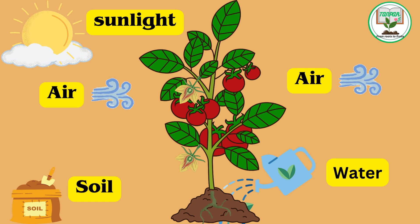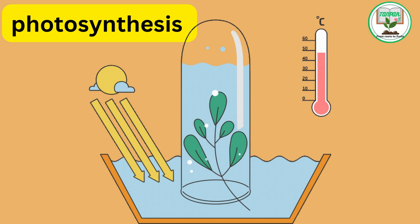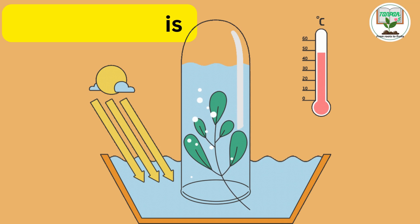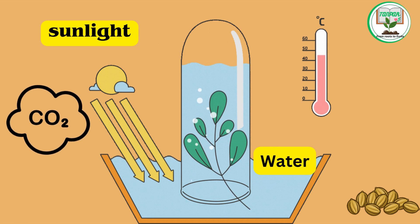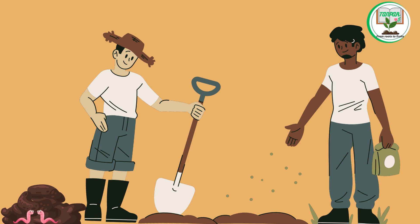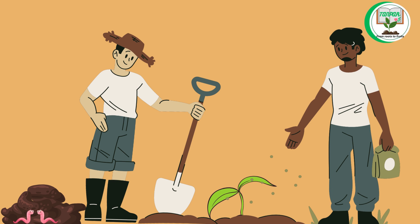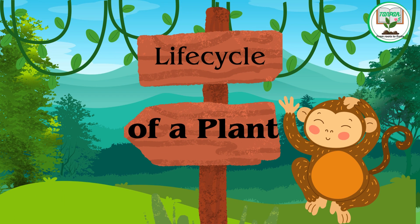How plants grow: plants need water, sunlight, soil, and air to grow. They use a process called photosynthesis to make their own food using sunlight, carbon dioxide, and water. Plants also grow from seeds, which can be planted in soil to sprout into new plants.